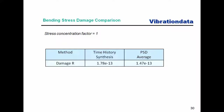You might ask: why not skip the time history synthesis altogether and just use the PSD method? In some cases that's fine — when the PSD represents a steady-state, stationary, Gaussian distribution. But if you have measured field data that is non-stationary or non-Gaussian, the PSD method won't work. In that case, you must do a time-domain rainflow calculation.